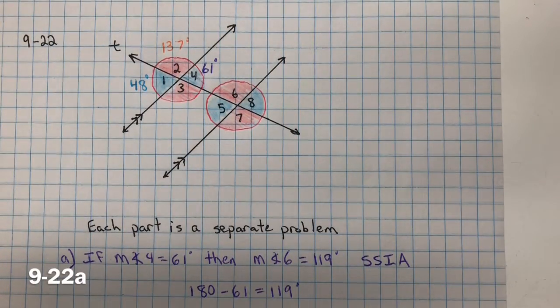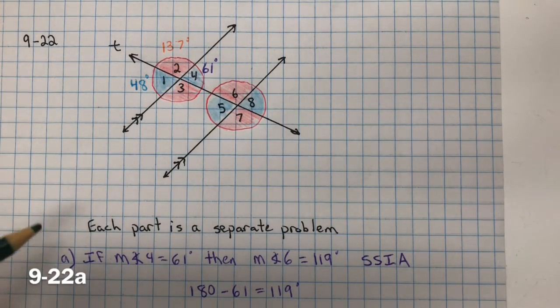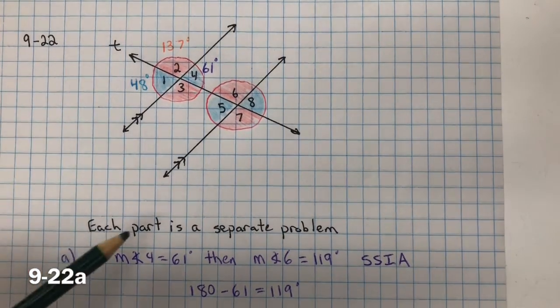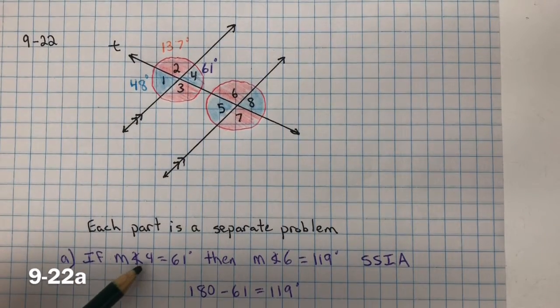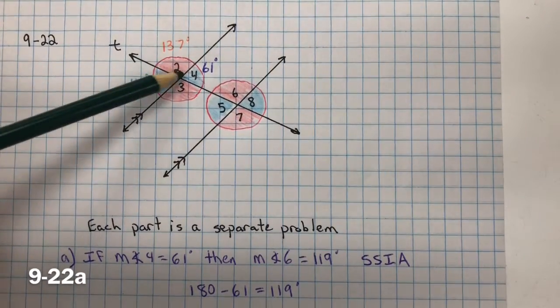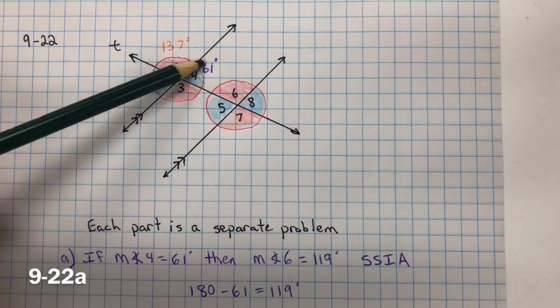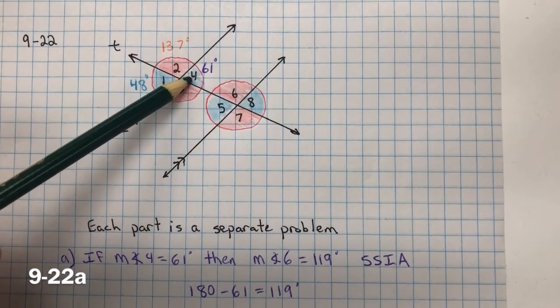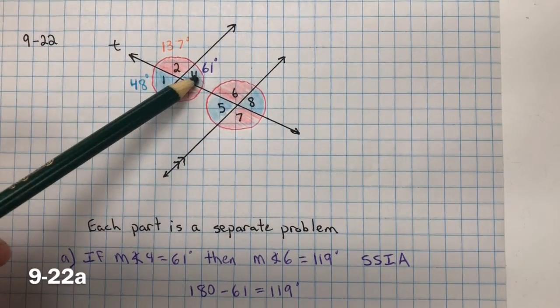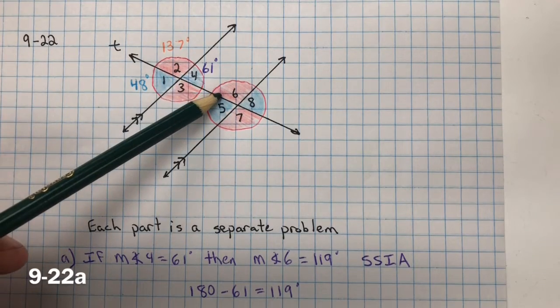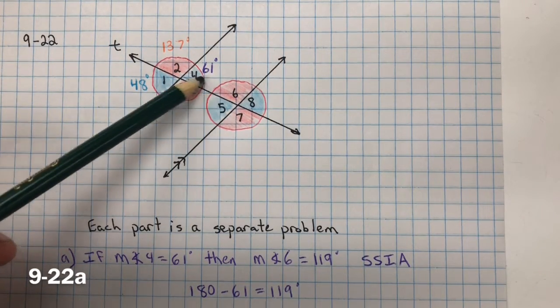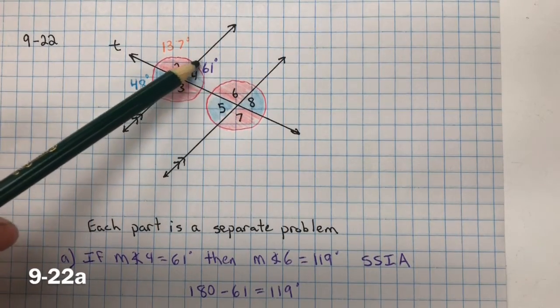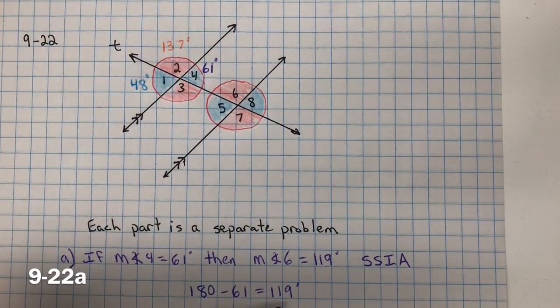For 9-22, we need to find the measures of the angles requested and explain how you found them. Remember that each part is a separate problem. So for part A, if the measure of angle 4 equals 61 degrees, so here angle 4 is 61, and we need to find the measure of angle 6. These are same side interior angles, and same side interior angles add up to 180. So if we know that these two equal 180, we subtract 61, and we get 119.